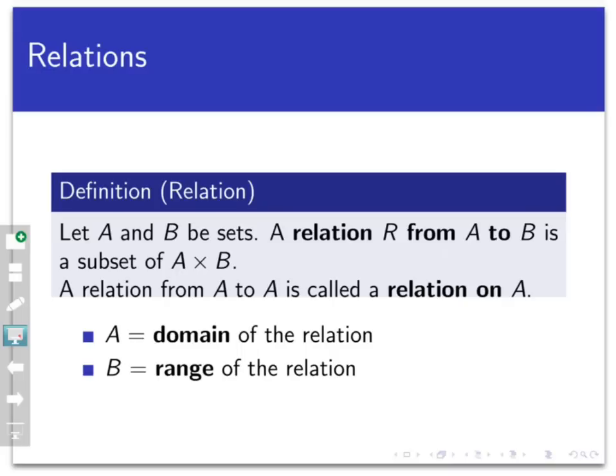And sometimes, like with our social network, the sets A and B are the same. In that case, if we have a relation from a set to itself, which is just a subset of A × A, we call that just a relation on A.